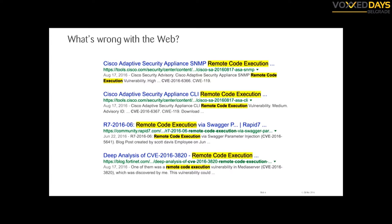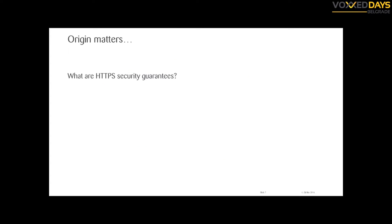Interestingly, remote code execution is also the name of a vulnerability. If you participate in bug bounty programs and find one, you're likely to get a lot of money, because it's the dream of any attacker to execute arbitrary code remotely. This gives special meaning to the origin of the code we execute within the browser.